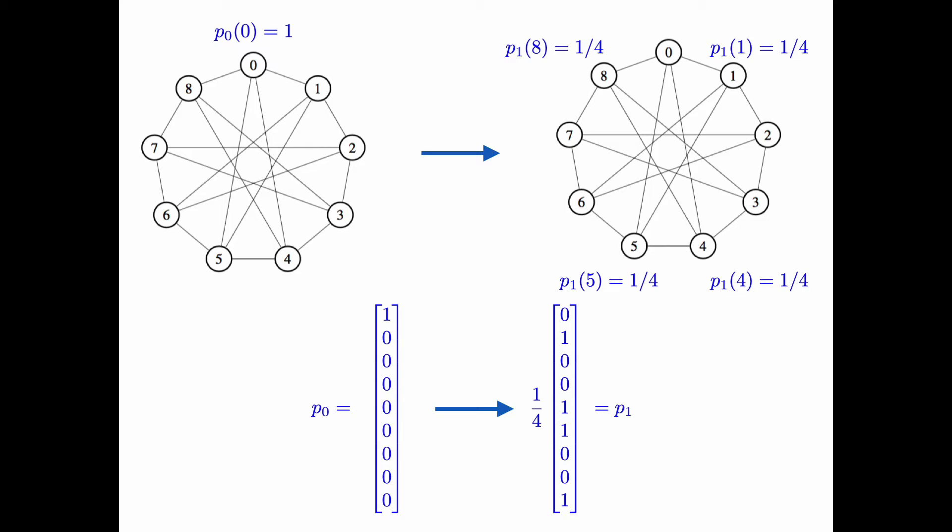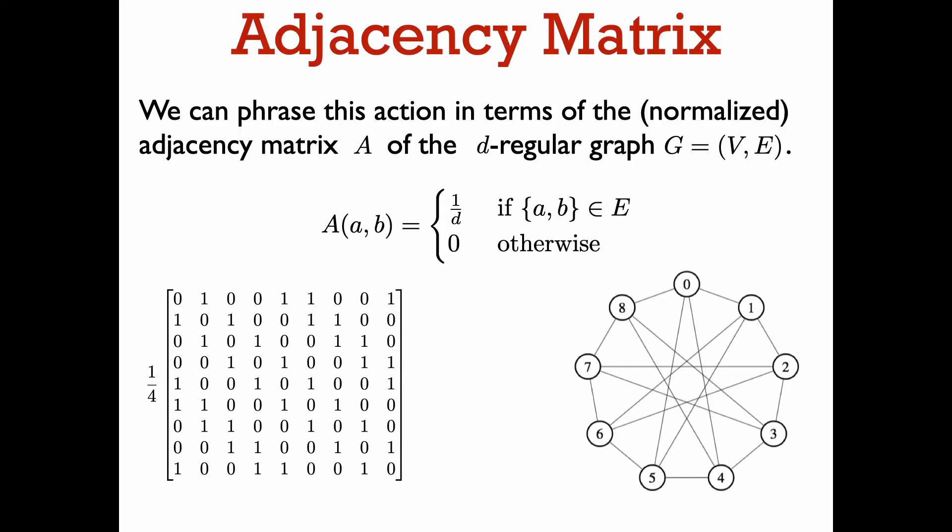In our example, p_0 is just a standard basis vector that is one in the zeroth position. And p_1, after one step of the walk, we evolve into the vector p_1, which is one quarter on vertices one, four, five, and eight, which are the neighbors of vertex zero. We can easily express the evolution of the vector p_t in terms of what is called the normalized adjacency matrix of the graph, which I will call A.